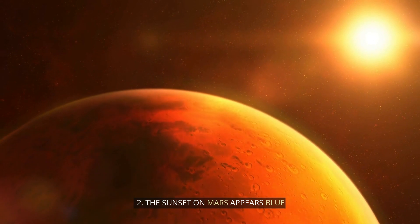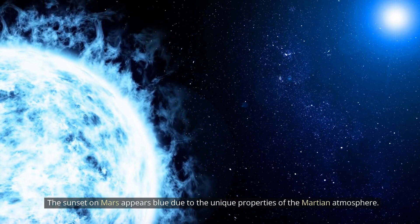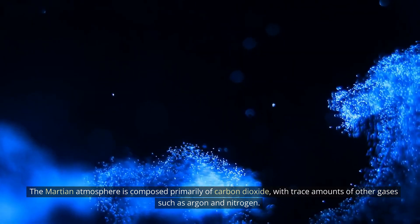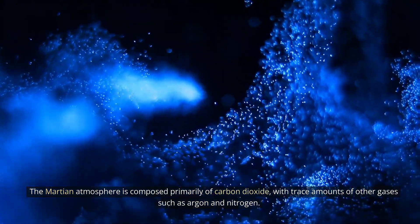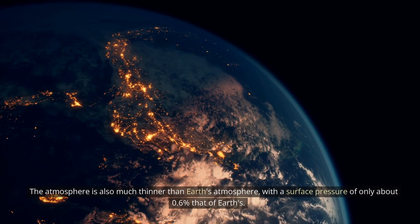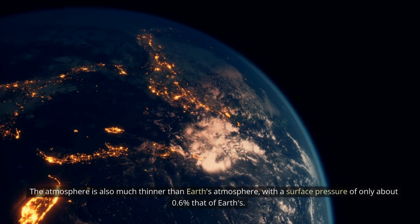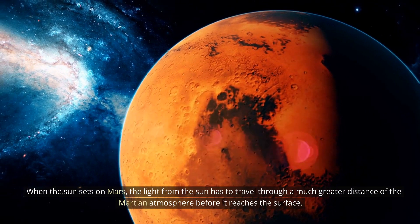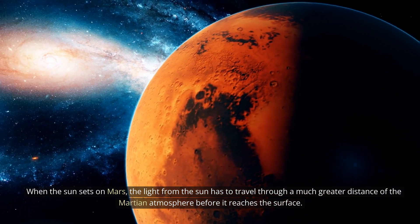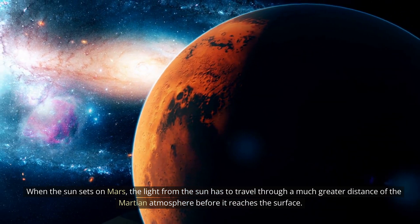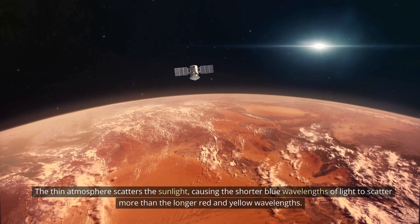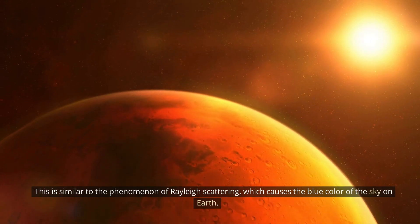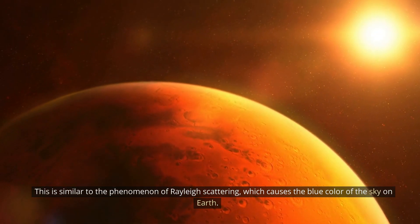2. The sunset on Mars appears blue. The sunset on Mars appears blue due to the unique properties of the Martian atmosphere. The Martian atmosphere is composed primarily of carbon dioxide, with trace amounts of other gases such as argon and nitrogen. The atmosphere is also much thinner than Earth's atmosphere, with a surface pressure of only about 0.6% that of Earth's. When the Sun sets on Mars, the light from the Sun has to travel through a much greater distance of the Martian atmosphere before it reaches the surface. The thin atmosphere scatters the sunlight, causing the shorter blue wavelengths of light to scatter more than the longer red and yellow wavelengths. This is similar to the phenomenon of Rayleigh scattering, which causes the blue color of the sky on Earth.